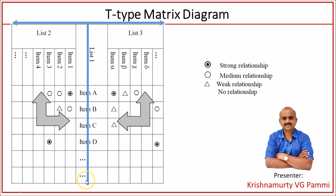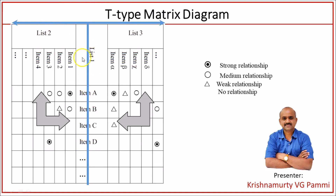In the T-type matrix diagram, you have two L shapes: list 1 with list 2, and list 1 with list 3. Items A, B, C, D of list 1 are correlated with items 1, 2, 3, 4 of list 2 with varying relationship strengths. Additionally, items A, B, C, D of list 1 are correlated with items alpha, beta, gamma, delta of list 3. However, you cannot directly compare or correlate items between list 2 and list 3 in a T-type matrix.